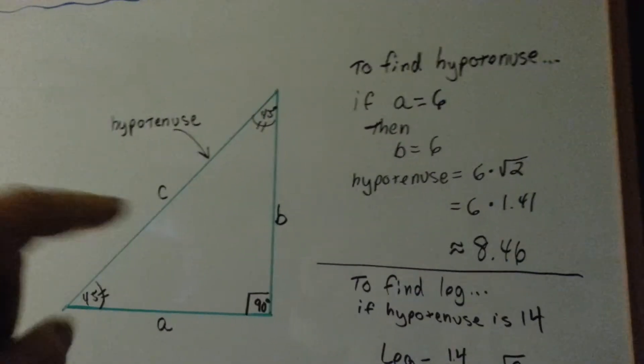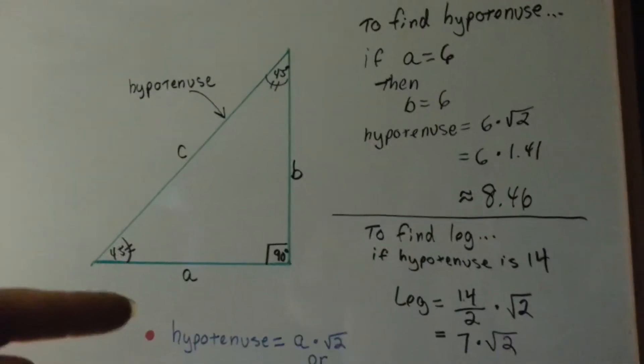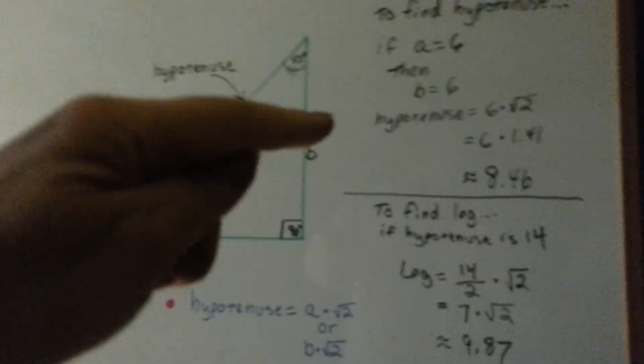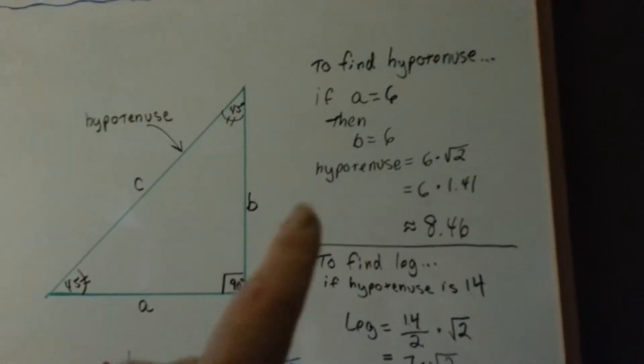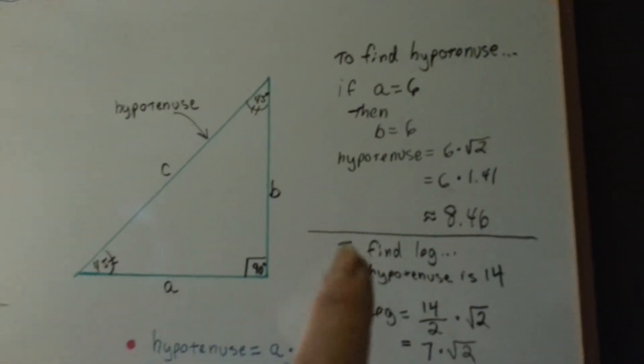So, look, we'll try to find the hypotenuse for this one. Let's say that a is 6. Well, then, because a is equal to b in this, that means b is 6, right? So, if a is 6, then b is 6. So, to find the hypotenuse, we're going to do this one.